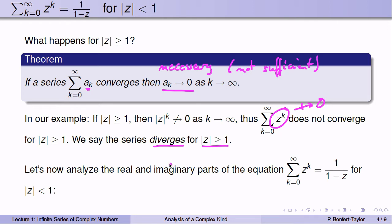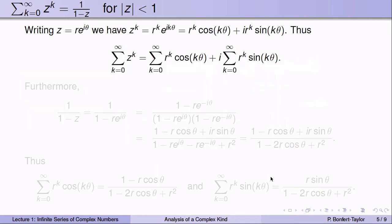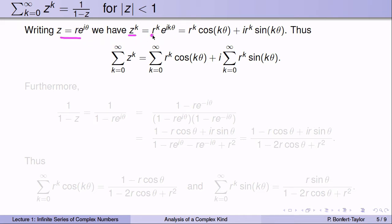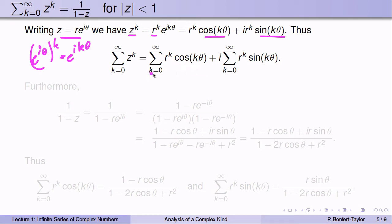Let's now analyze the real and imaginary parts of this equation. We found that for |z| < 1, the sum of z to the k equals 1 over (1 minus z). Let's write z in polar form as r e to the i theta. Then z to the k equals r to the k times e to the i k theta, and by de Moivre's formula that equals r to the k times (cosine of k theta plus i sine of k theta). So the sum of the z to the k's equals the sum of r to the k cosine k theta — the real part — plus i times the sum of r to the k sine k theta — the imaginary part.